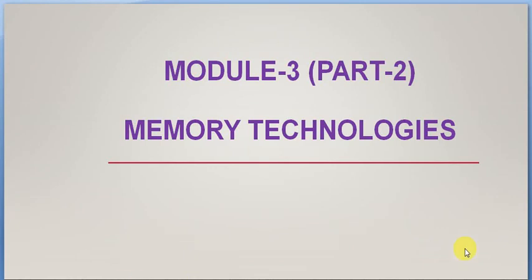Hello students, today we will discuss the second part of memory technologies. In our earlier session we were discussing about cache memory, which is the closer memory of the processor. We saw different categories of cache memories and how we can improve performance by doing optimizations on cache memory, including many types of cache optimization techniques.